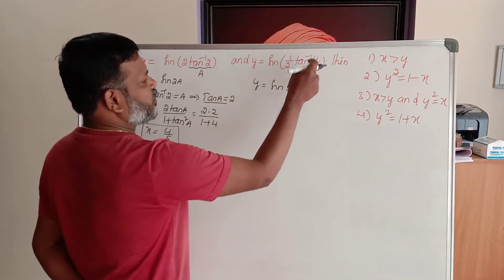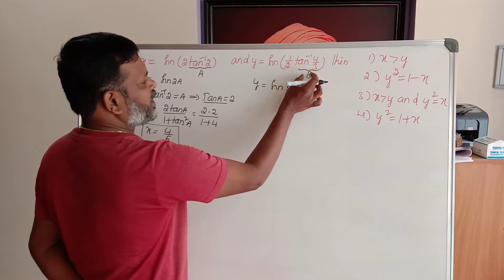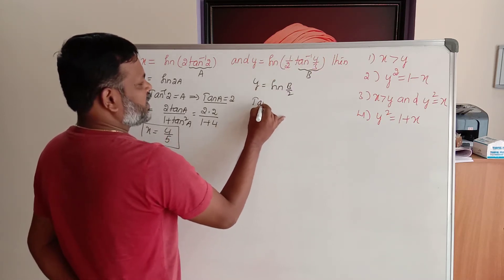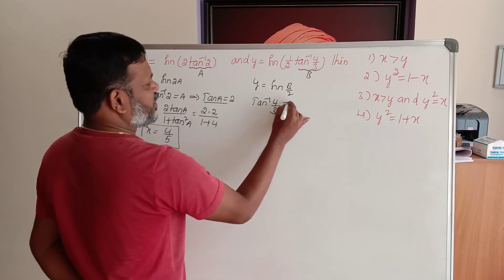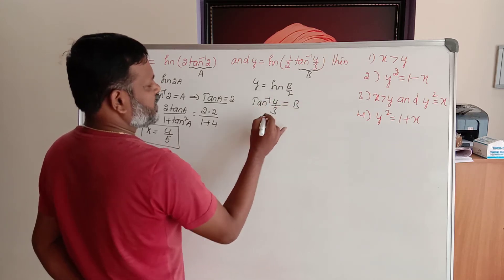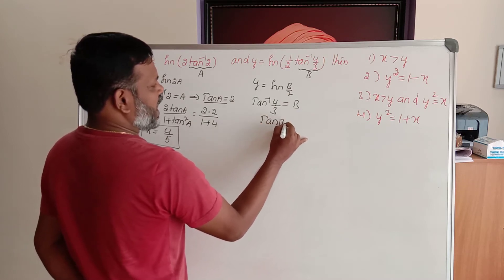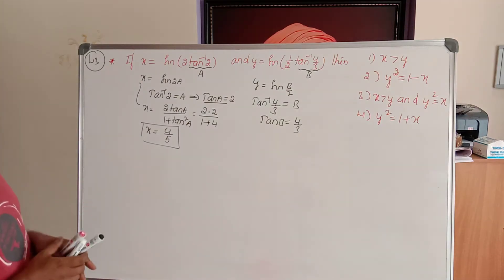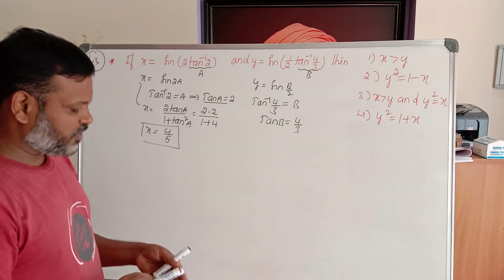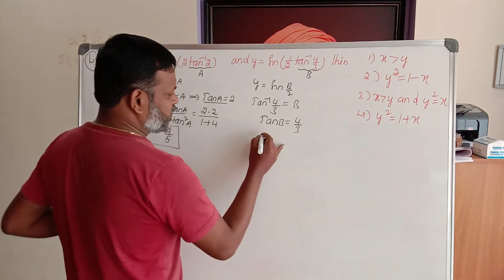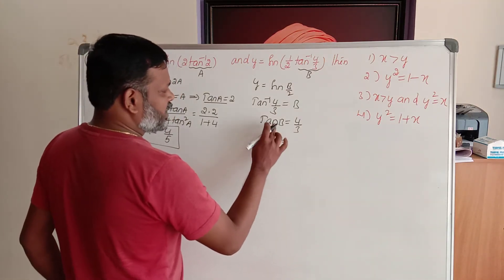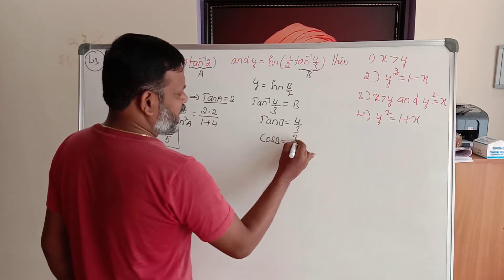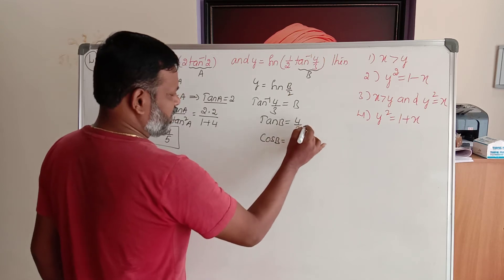y is equal to sin of half tan inverse 4 by 3. We have taken 4 by 3 as b, so this becomes sin b by 2. Now, tan inverse 4 by 3 equals b, so tan b equals 4 by 3. It is not easy to find sin b by 2 directly, so let us first find cos b. When tan b equals 4 by 3, cos b equals 3 by 5, using the Pythagorean triplet.